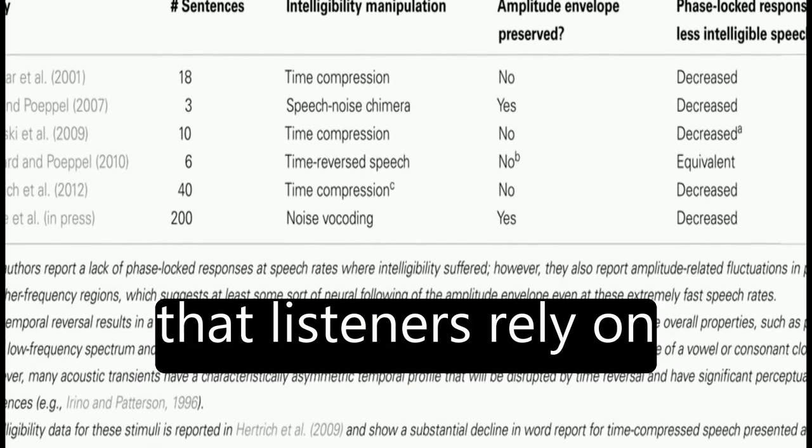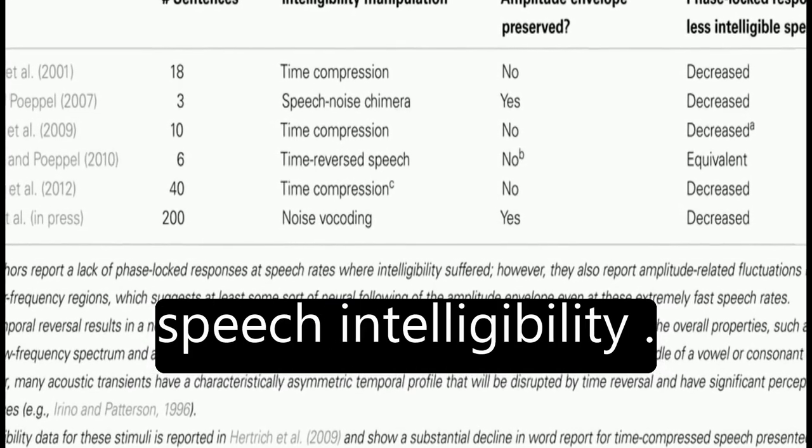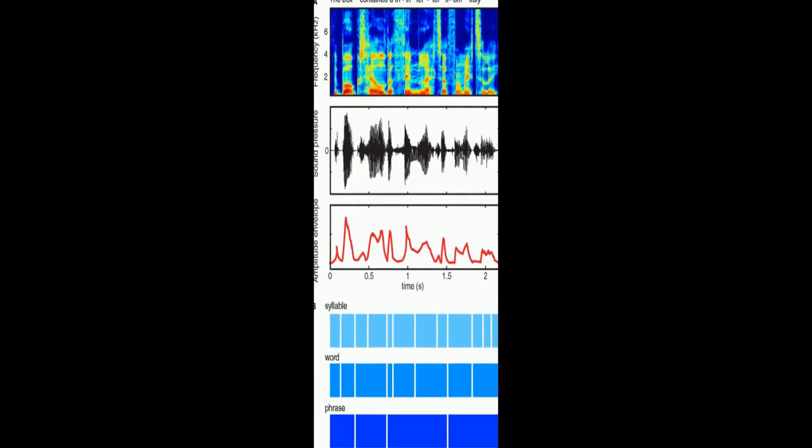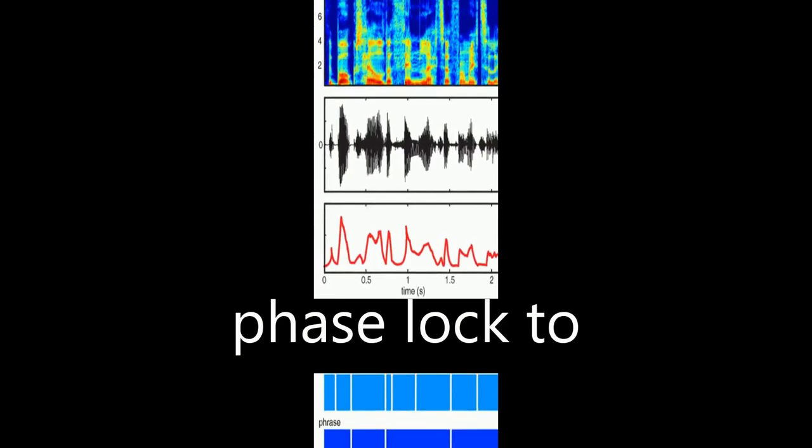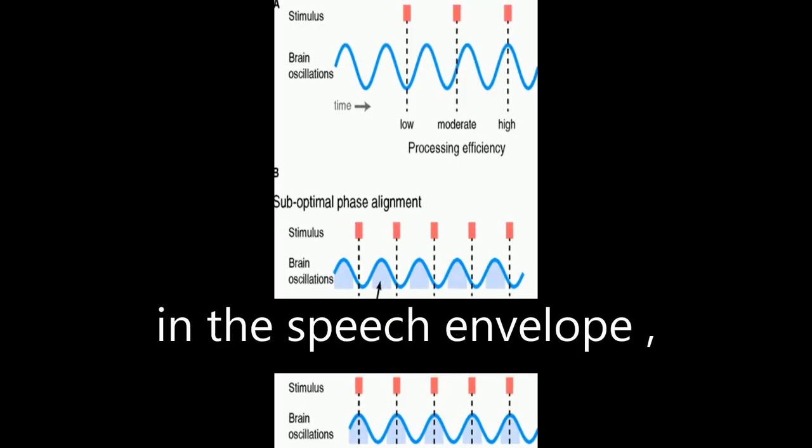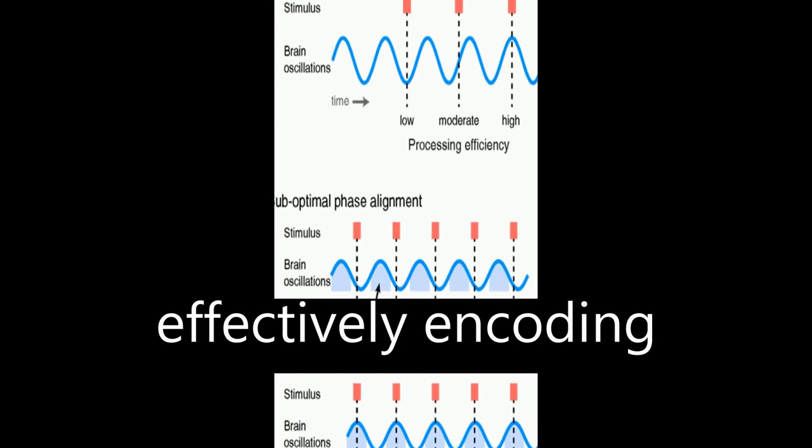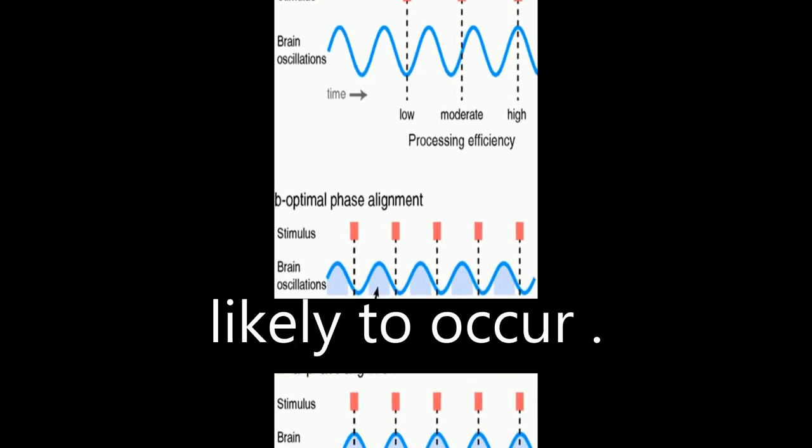Behavioral studies show that listeners rely on this information for speech intelligibility. Neuroimaging data suggests that ongoing cortical oscillations phase lock to low-frequency information in the speech envelope, effectively encoding predictions of when important events are likely to occur.